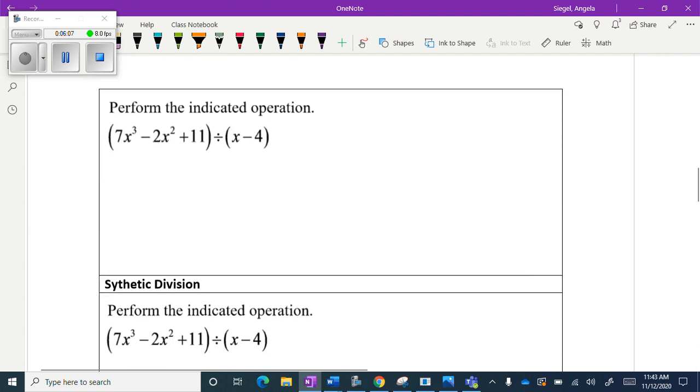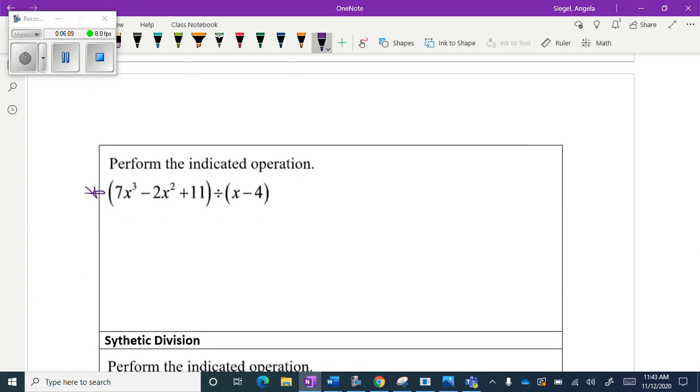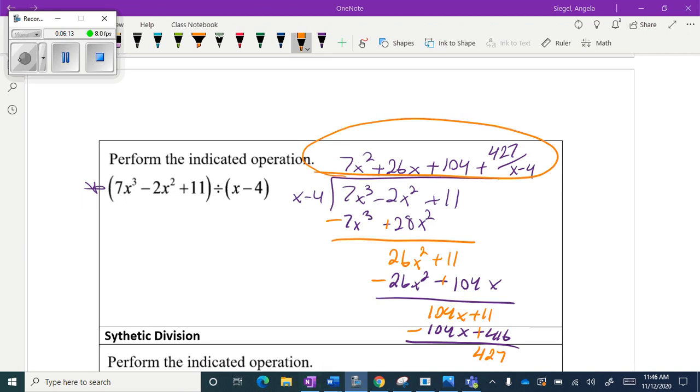So go ahead and do the same thing with this problem. See if you can do it. Okay, so I showed all my steps. Just don't forget to subtract. And then also down here, you know you're done when I got down to this and I can't have x go into 427. So I knew that that was my remainder.